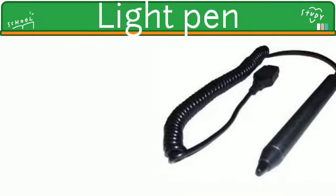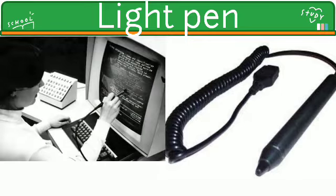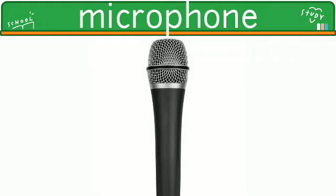Light pen: A light pen is a light-sensitive computer input device that is used to select text, drop pictures, and interact with user interface elements on a computer screen or monitor. The CPU processes the signal sent by the light pen and carries out the instructions.